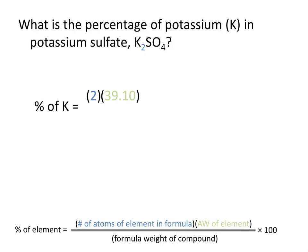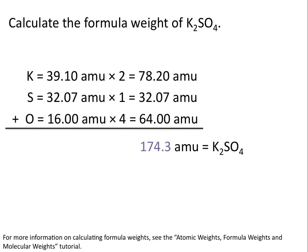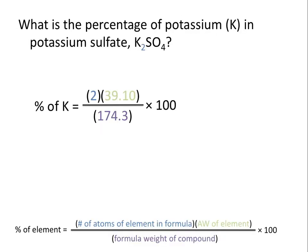Divide that by the formula weight of the compound. Using our periodic table, we determine that the formula weight of the compound is 174.3 AMUs. We then multiply this value times 100 to give us the percent.